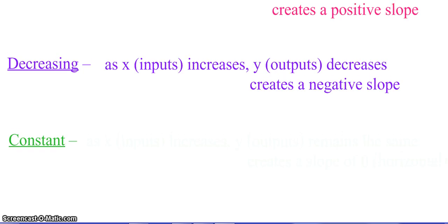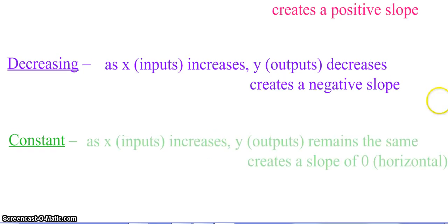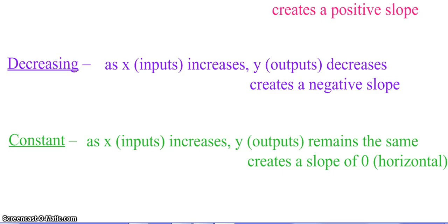If your graph is neither increasing nor decreasing, your graph is constant. So as your x inputs get bigger, reading left to right, your y values remain the same. This is going to create a slope of zero, or a horizontal slope.